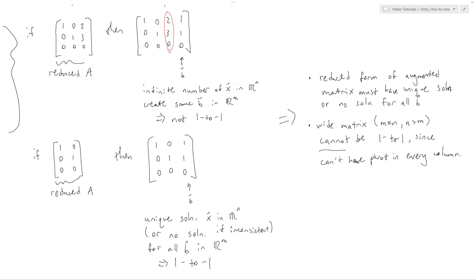Altogether, we have seen how to determine whether a transformation is onto or one-to-one in any dimension by studying the reduced form of the transformation matrix. Even though you can now determine these properties in an easier way, I hope that this video has helped you better understand what they truly mean and where the reduced matrix characterization comes from.